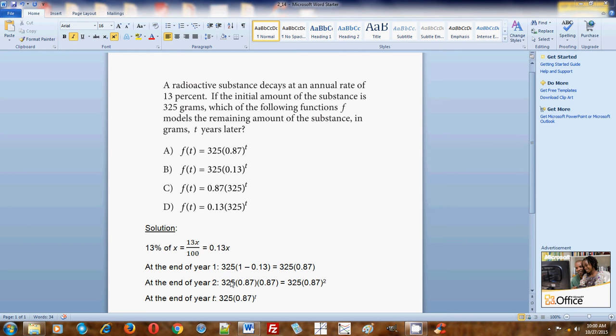So now there's a correlation. Let's see what the correlation is. The correlation is that the year number, at whatever the end of the year that you're looking at, in this case it's year two, matches the exponent of the 0.87.